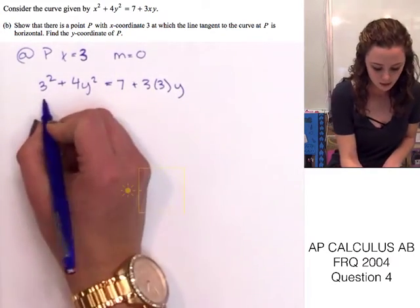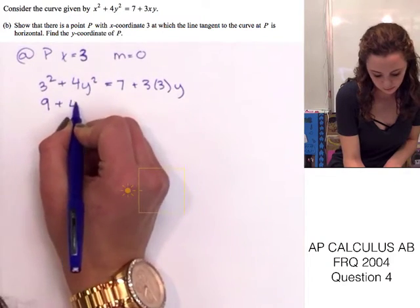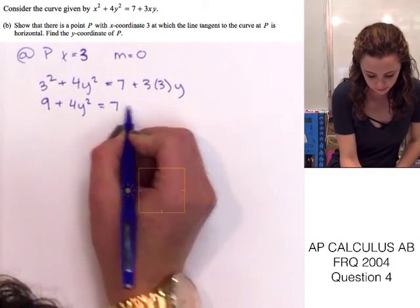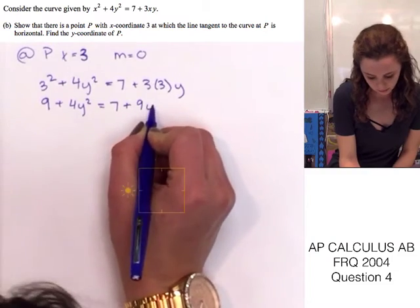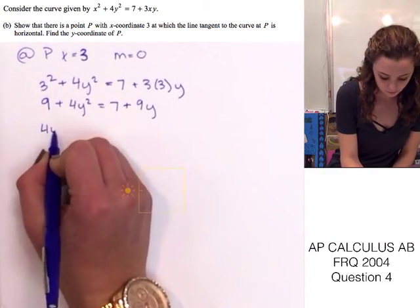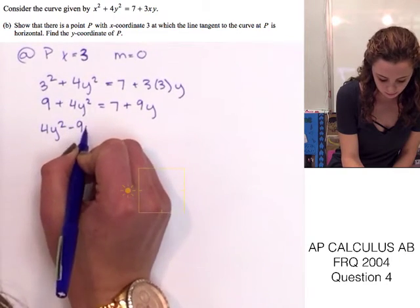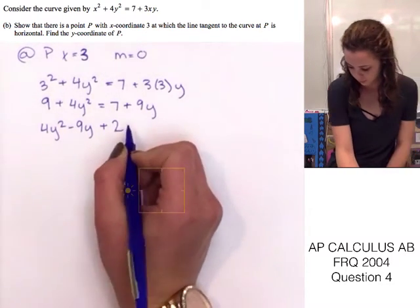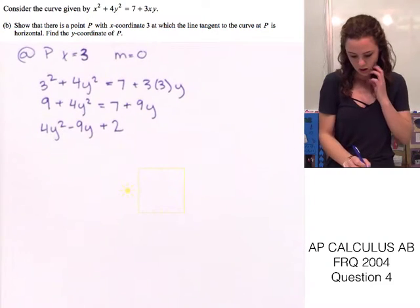Let's go ahead and solve for y. This is 9 plus 4y squared equals 7 plus 9y. Let's move everything to one side. We end up with 4y squared minus 9y plus 2.